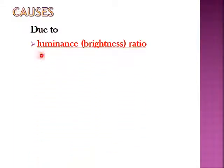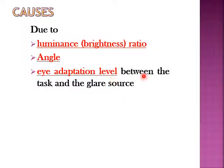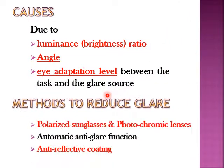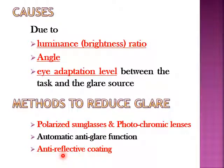What are the causes of glare? Glare occurs due to variations in the brightness ratio, the angle, and the eye adaptation level formed between the task and the glare source. Glare is usually reduced by using polarised sunglasses and photochromic lenses. An automatic anti-glare function is developed in vehicles which automatically adjusts the brightness and contrast of headlamps depending on current situations. An anti-reflecting coating — a form of protective shield — is placed over TV screens, computers, laptops, and mobile screens to reduce the amount of reflection emerging from the screen.